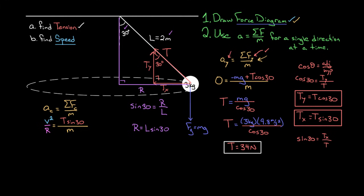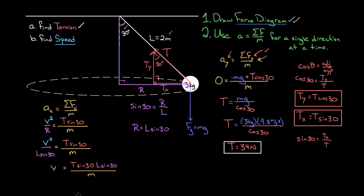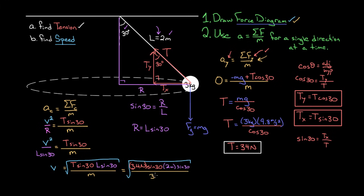Substituting back: v²/(L·sin30°) = T·sin(30°)/m. Multiplying both sides by L·sin(30°): v² = T·sin(30°)·L·sin(30°)/m. Taking the square root: V = √(T·sin30·L·sin30/m). Plugging in T = 34 N, L = 2 m, sin(30°), and m = 3 kg gives a speed of about 2.38 m/s, which I'll call 2.4 meters per second.